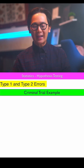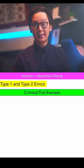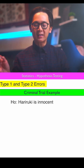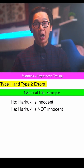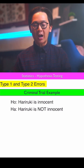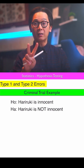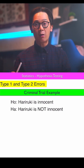For the type 1 and type 2 errors, let's try a case using a courtroom or criminal trial example. We'll have two hypotheses: the first is that Harry Ruki is innocent — that is our null hypothesis — and the alternative hypothesis is that Harry Ruki is not innocent. Keep in mind that we are trying to write the two possible errors that may occur when we come up with a conclusion based on our hypotheses.